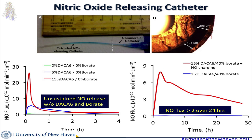We looked at how much nitric oxide we can release from the catheter using chemiluminescence — an instrument we have in our lab. The graph shows that most of the nitric oxide is released within the first hour and is nearly depleted. However, after adding a pH-stabilizing additive called borate at 40%, instead of releasing all the nitric oxide within the first hour at about 25 nanoflux, you drop that down to about 7 and are able to release it for longer durations.